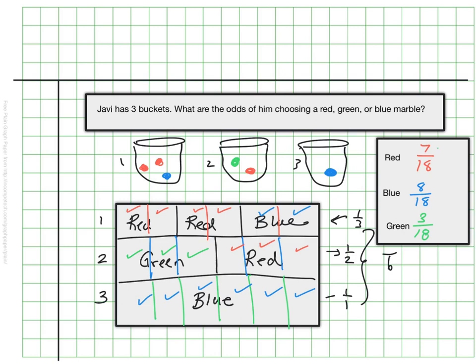And let me just double check: seven plus eight plus three is 18, so I know this is a valid probability model. Which means that if Javi had to make some choices randomly and he first was choosing a bucket and then choosing one marble from that bucket, he would have a 7/18 chance of getting red, 8/18 getting blue, and 3/18 getting green.